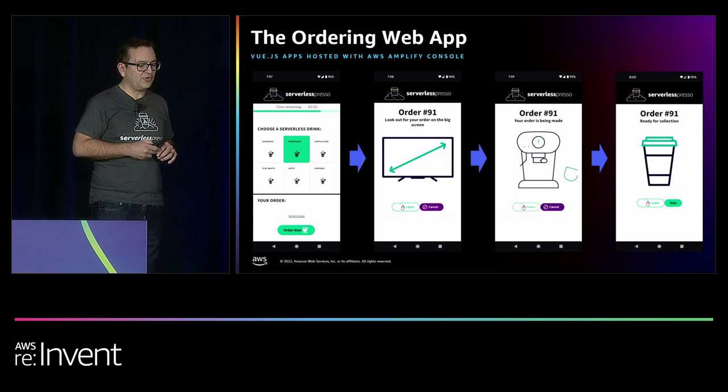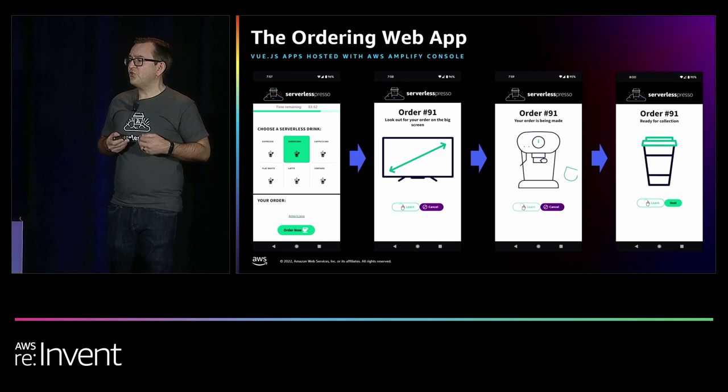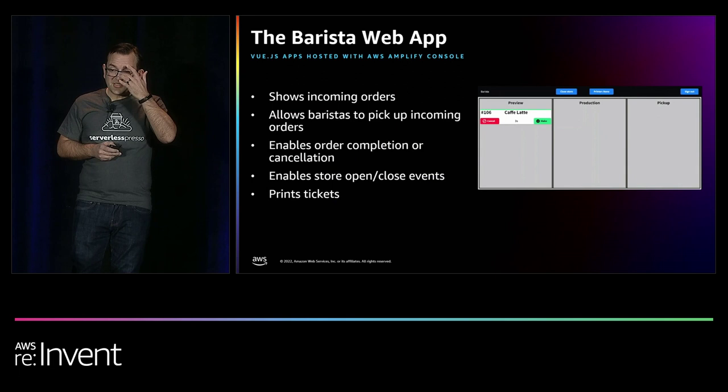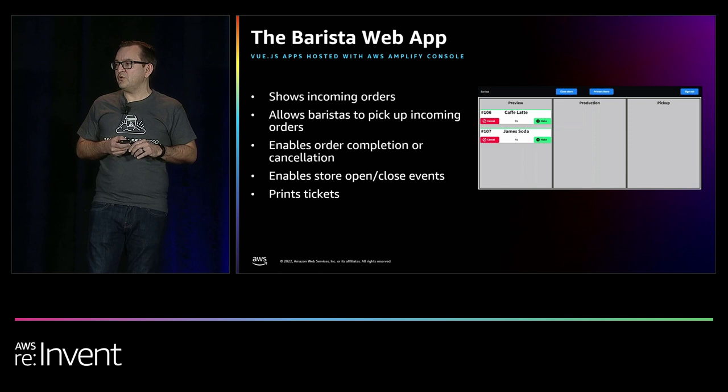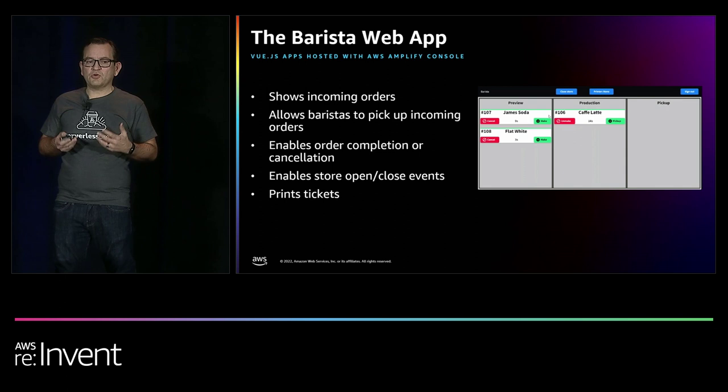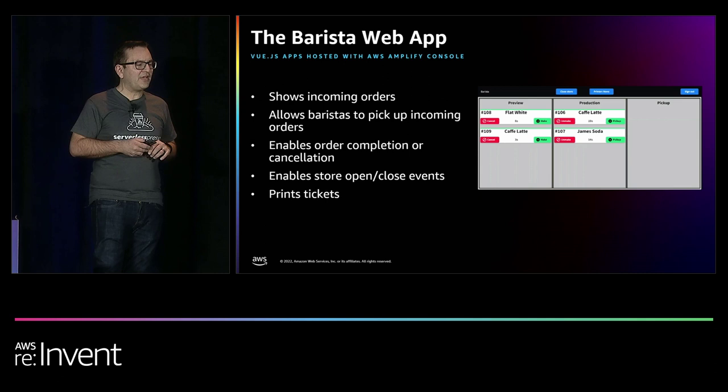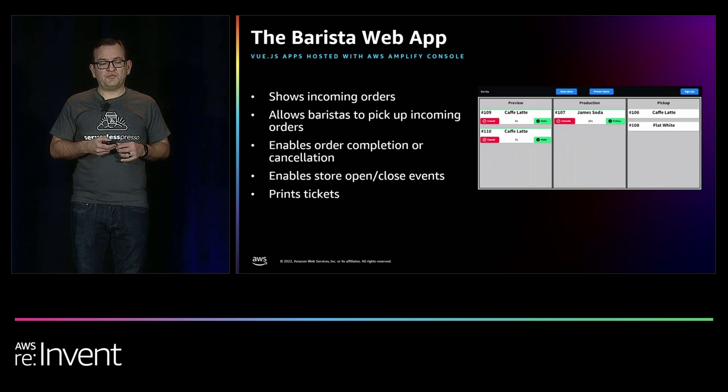There's also a link that shows you a unique coffee journey — all the steps your coffee went through in terms of events. The barista web app is a tablet that gives baristas a list of all upcoming orders. It enables them to move orders into a pending or complete status, cancel orders, open and close the store, and it connects to a thermal printer that produces the tickets.